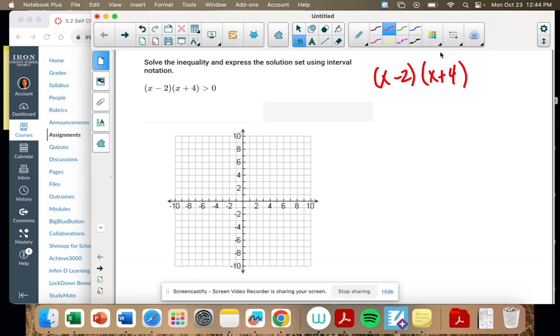We're going to solve it as if it's equal to zero, because we need to know what our critical numbers are. So I set each factor equal to zero, and solve. So x equals 2, and x equals negative 4. Those are my zeros, they're my x-intercepts.